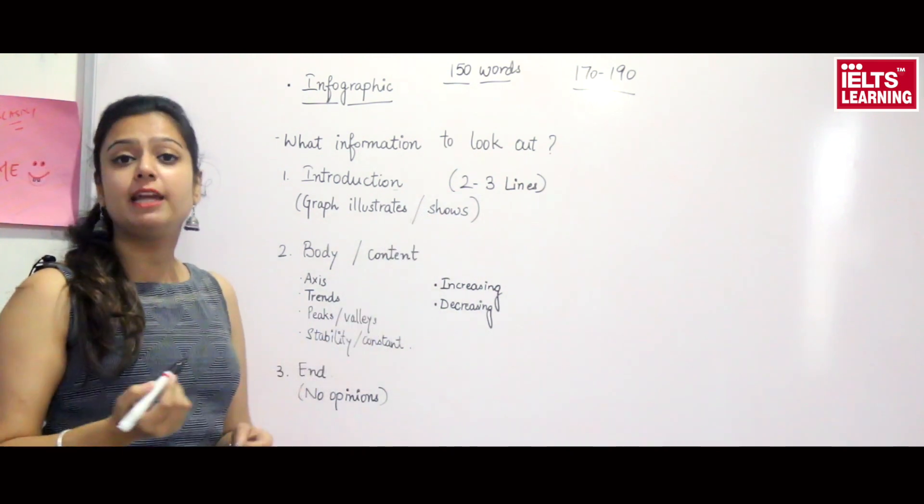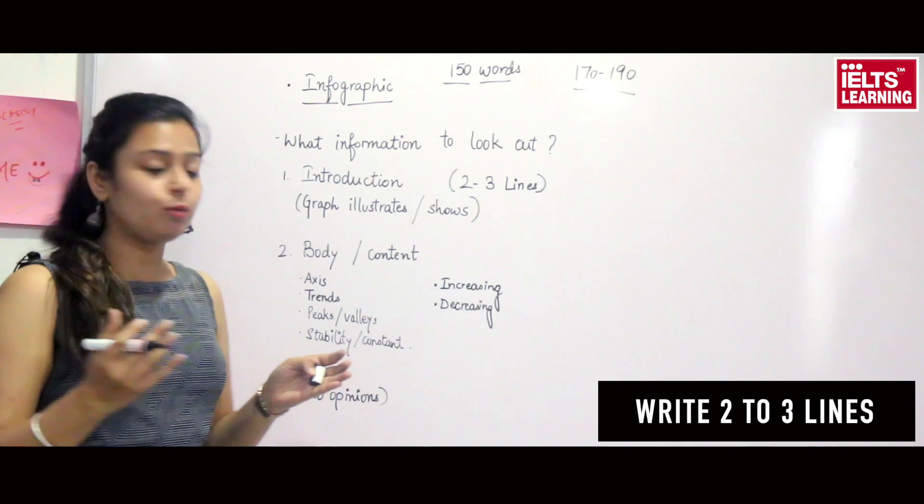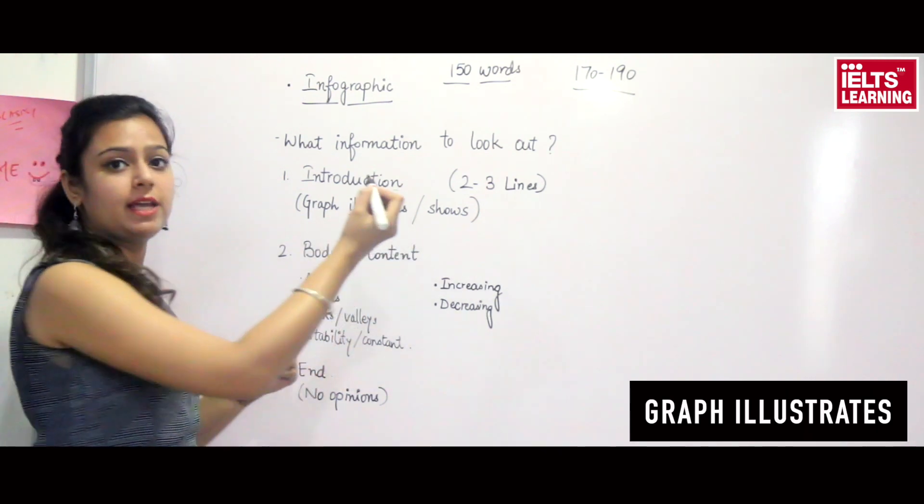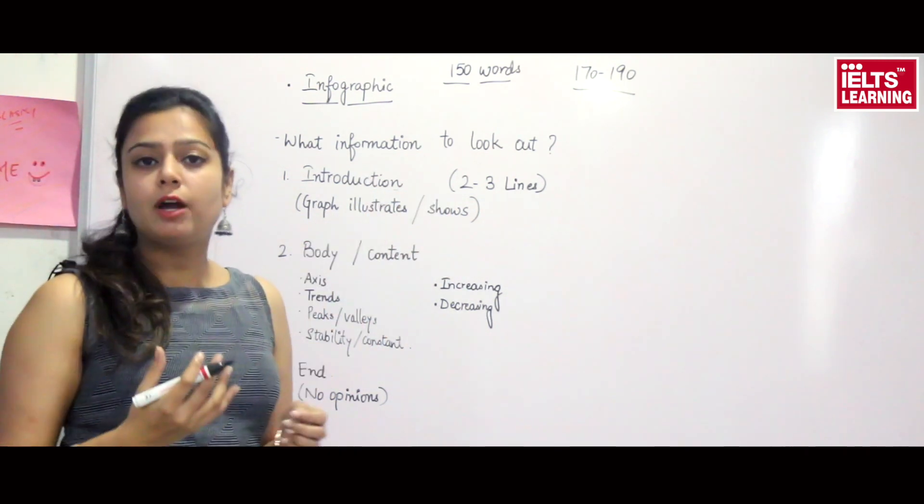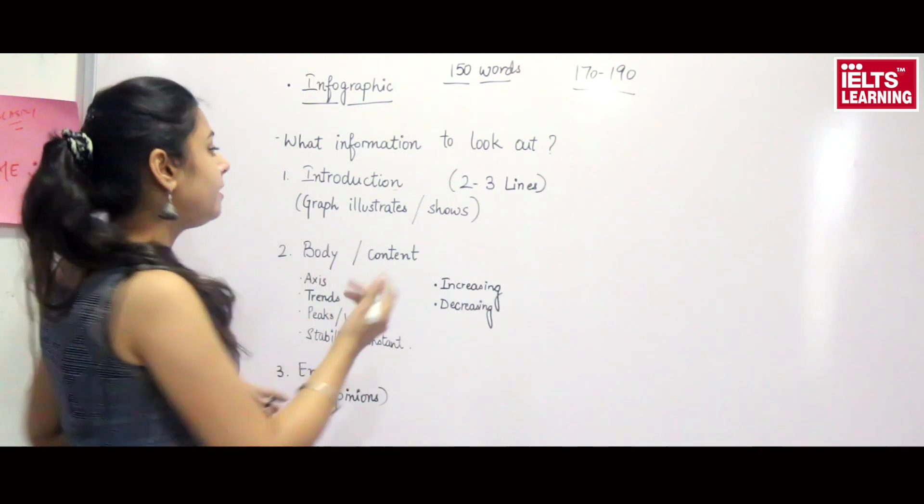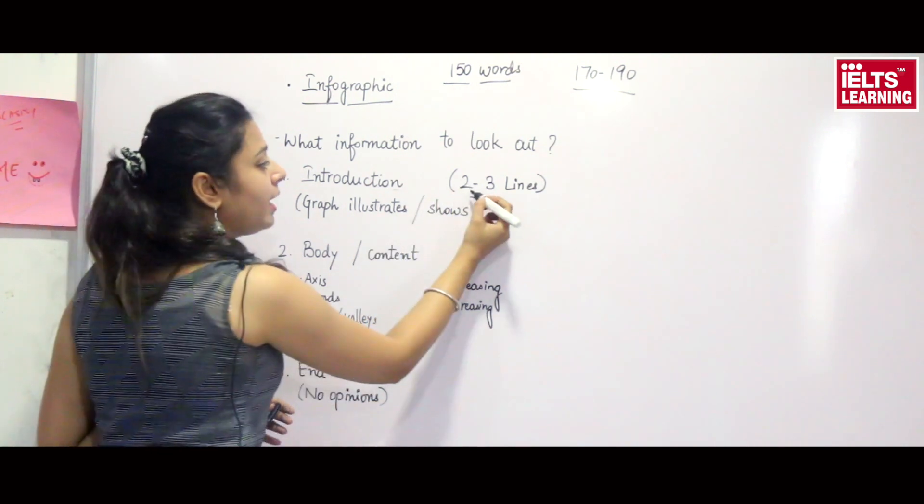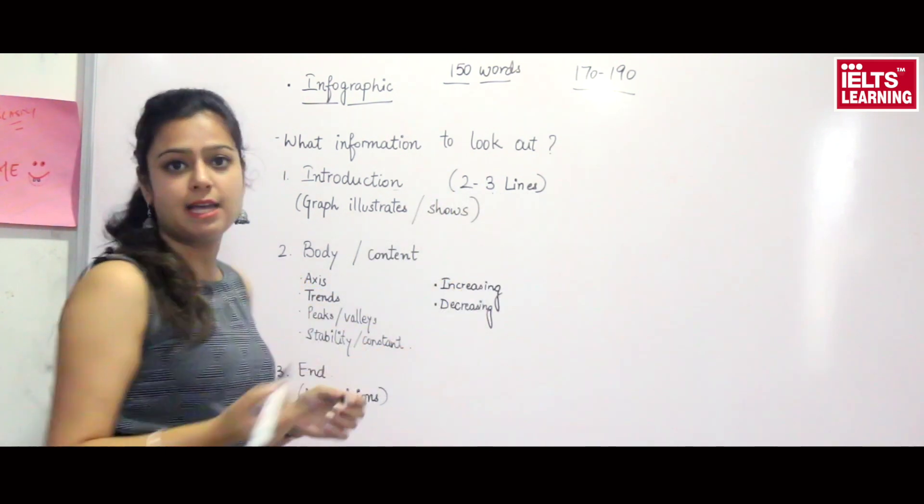In the introduction part, you just have to write two to three lines, and it is given in the exam. For example, the graph illustrates or shows the population of two countries like China or India. You don't have to elaborate much, just two to three lines.